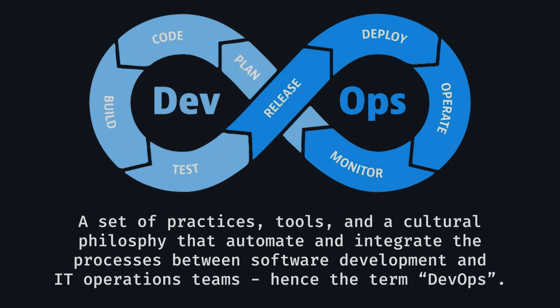Hey, my name is Forrest, welcome back. DevOps by definition is a set of practices, tools, and a cultural philosophy that automate and integrate the processes between software development and IT operations teams — hence the term DevOps. Or as I like to define it: it's how developers operate, because if you're working by yourself or as part of a small team, you do all of these things.